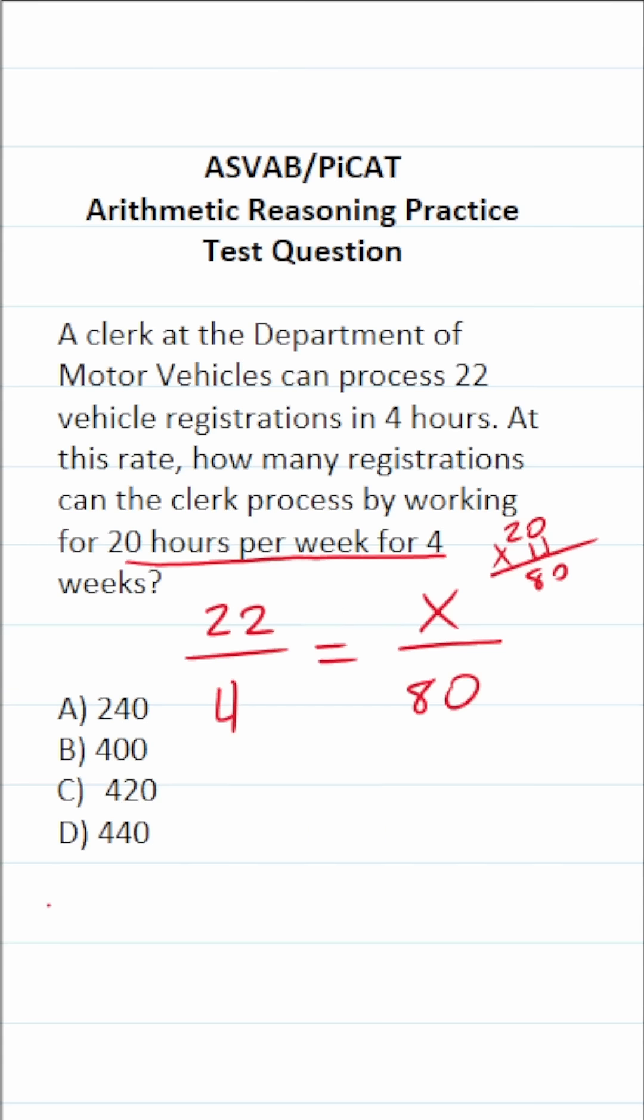You solve proportions via cross multiplication. So we're going to do four times x, which is 4x equals 22 times 80.